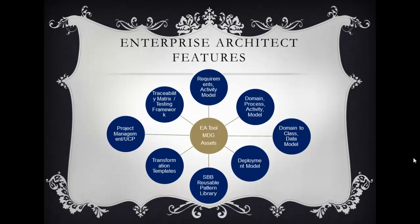You can validate your opportunities and solutions and choose the best model. Transformation templates help you generate documents and create migration plans. Architecture governance and management can be taken care of with project management tools. Traceability matrix and testing frameworks ensure you have a proper governance model implemented.